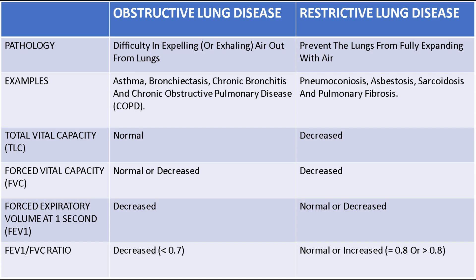We will now discuss differentiating factors of obstructive and restrictive lung diseases in a tabular form. The pathology in obstructive lung disease is difficulty in expelling or exhaling air from the lungs; in restrictive lung disease, the lungs are prevented from fully expanding with air. Examples of obstructive lung disease include asthma, bronchiectasis, chronic bronchitis, and COPD. Examples of restrictive lung disease include pneumoconiosis, asbestosis, sarcoidosis, and pulmonary fibrosis.